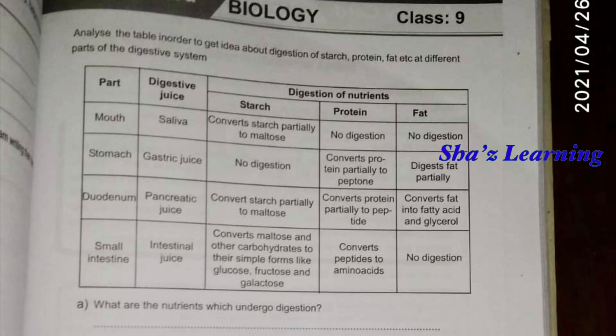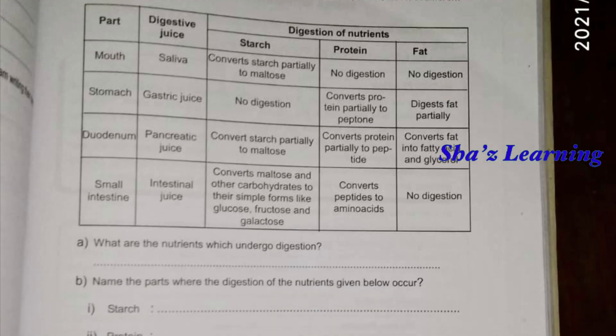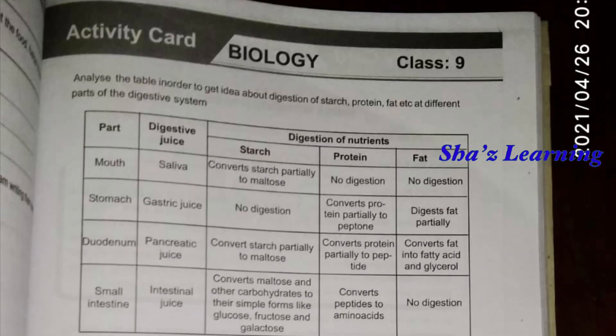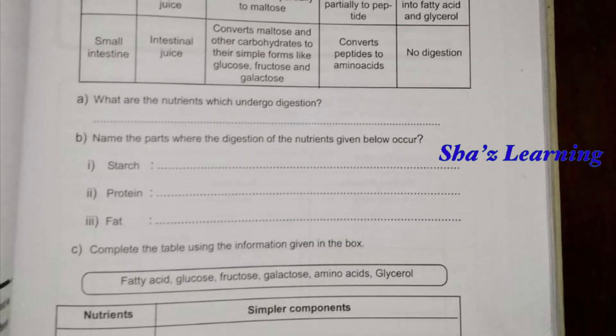Starch can be completely digested in the small intestine. The fat is already due to complete digestion. Let's look at these questions. What are the nutrients which undergo digestion? The nutrients are starch, protein, and fat.